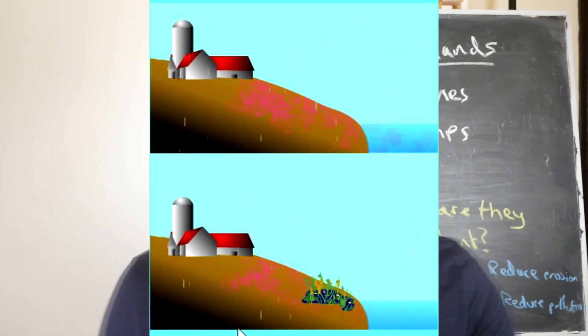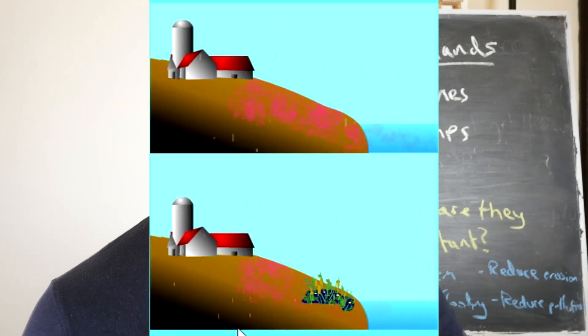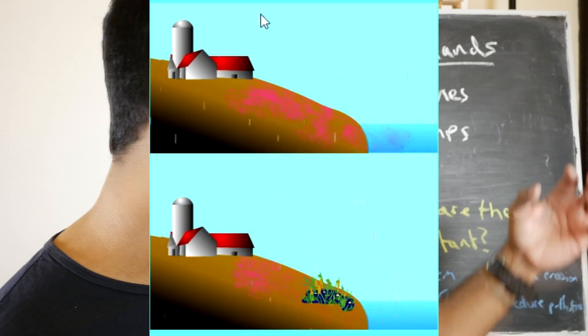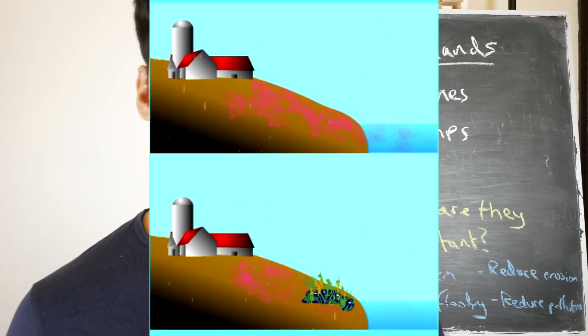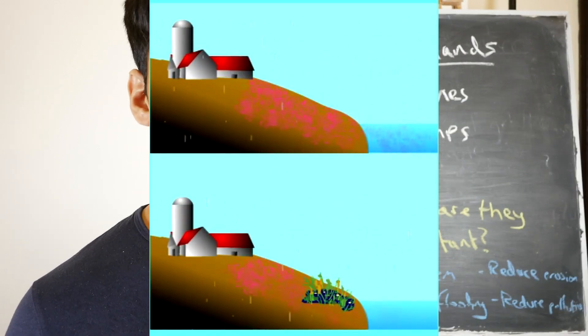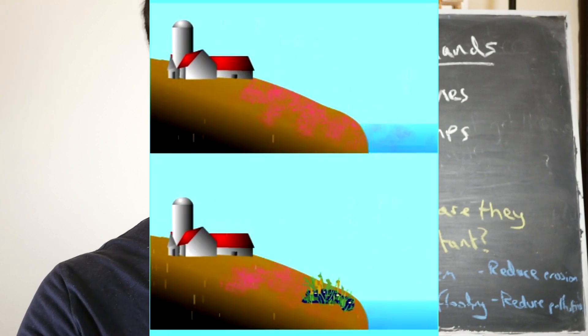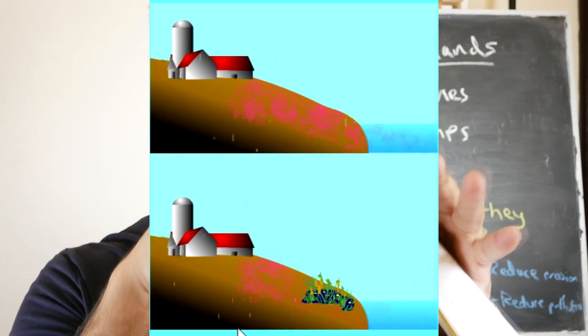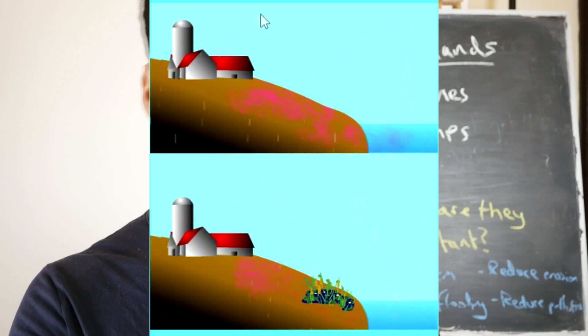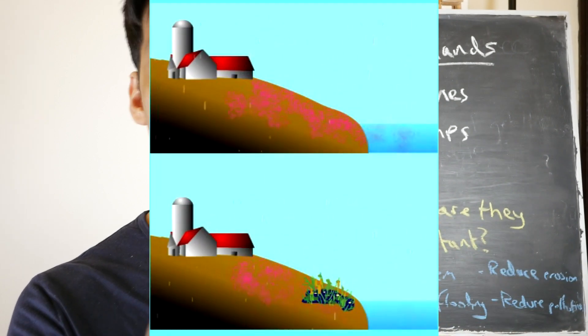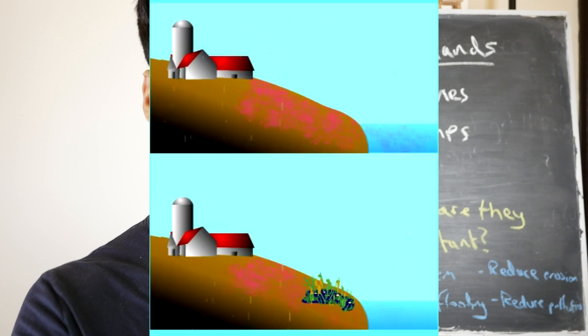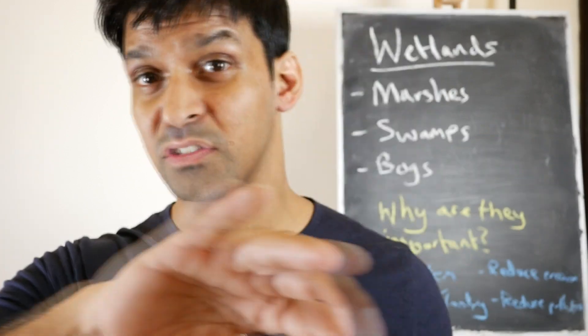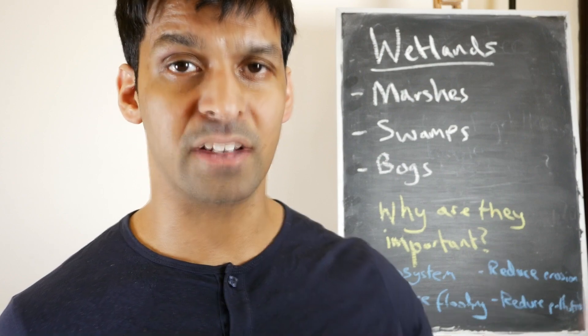Wetlands can also reduce pollution. When humans produce chemicals that get into the groundwater and that groundwater flows into a wetland, because the water is a lot slower moving, the chemicals within the sediments are able to settle down and get filtered and removed from the rest of the water supply. So eventually, when the water flows through the wetland, it no longer has as many chemicals as before.